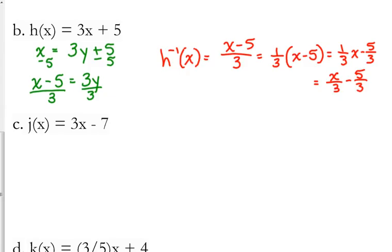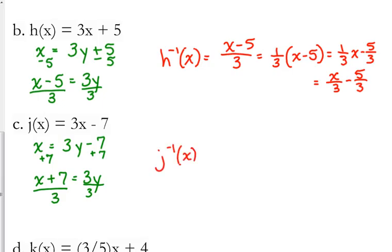Okay, let's look at another one. j of x. So x equals 3y minus 7. This time, start by adding 7. And once again, dividing by 3. So j inverse of x is equal to x plus 7 over 3. I'm not going to write it four different ways. I'm just going to leave it right there.